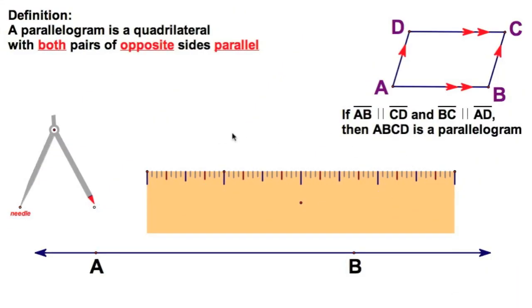Here is our first in a series of compass constructions, compass and straightedge for parallelograms. We're going to construct a parallelogram making use of the very definition. We are going to construct a parallelogram ABCD with both pairs of opposite sides parallel. Let's get right to it.